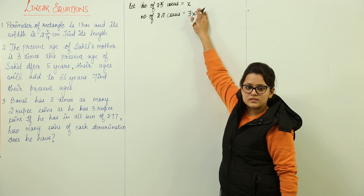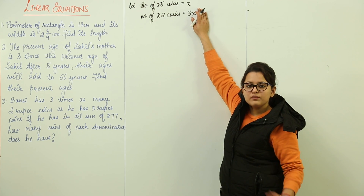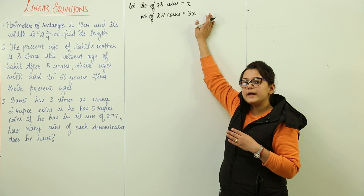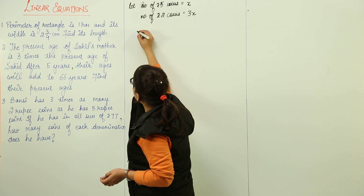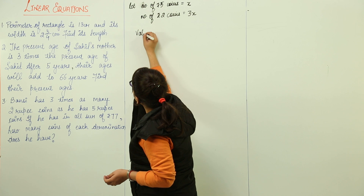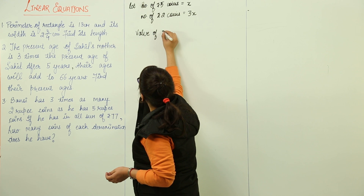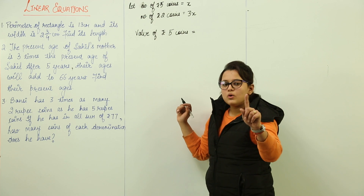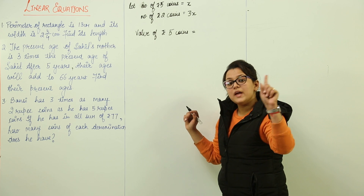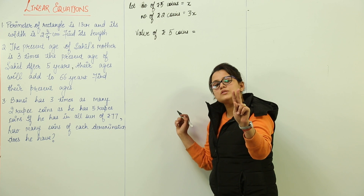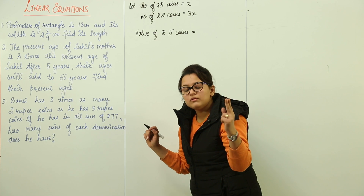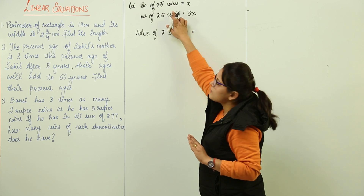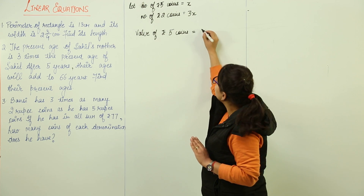If I have X coins of five rupees, two rupee coins are three times of that, meaning three X. Now, can we calculate their values? The value of total five rupee coins: one coin value is five rupees, and you have X coins of five rupees. If you have two coins of five rupees, the value is five into two, which is ten rupees. So if you have X coins of five rupees, the value will be five X.